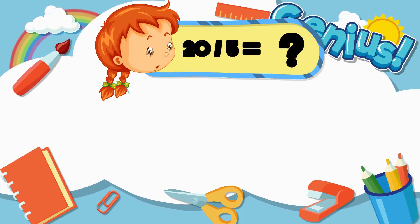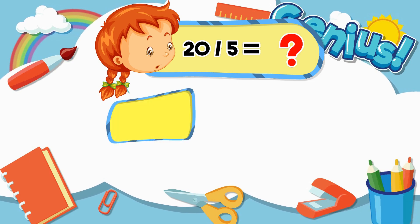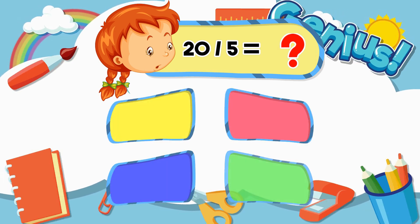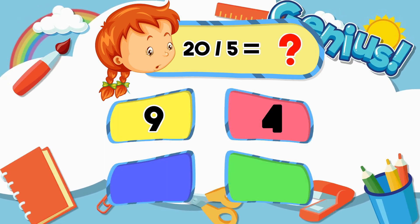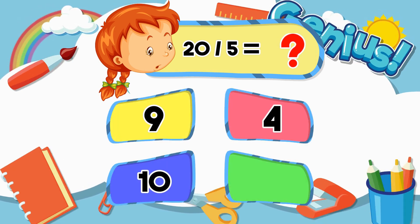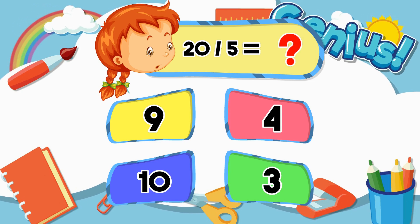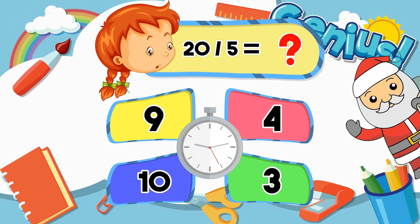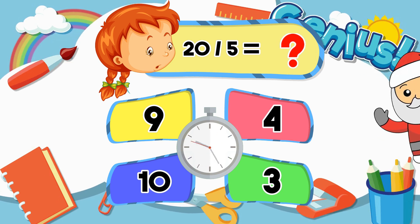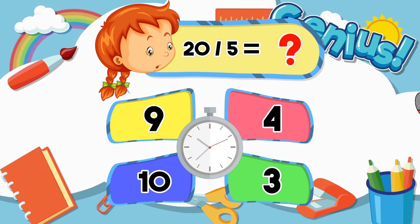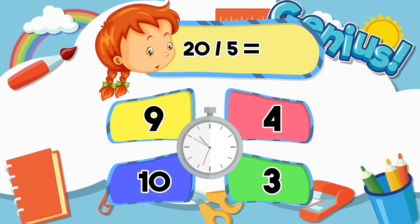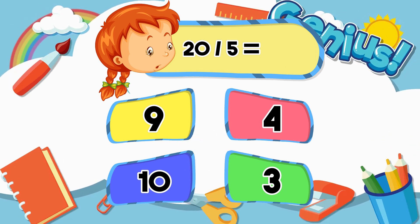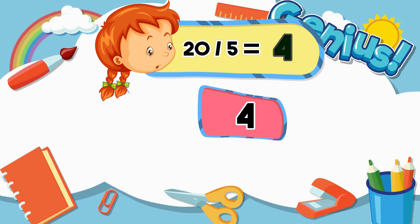What is 20 divided by 5? 9, 4, 10, 3. 4.